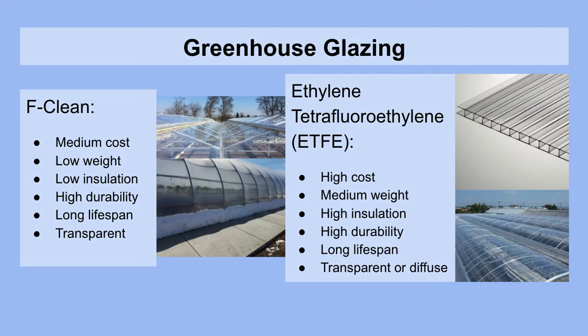Some newer glazings include F-Clean, which has a medium cost, a low weight, low insulation, but high durability and a long lifespan, and is extremely transparent. It's malleable and can be adapted to a variety of situations. Then you also have ETFE, which stands for ethylene tetrafluoroethylene. This has a high cost, a medium weight, high insulation, high durability, a very long lifespan, and it can be extremely transparent unless you choose a diffuse variety. It has traditionally been used in architectural buildings and is now being adapted for greenhouse use because it's quite appropriate.